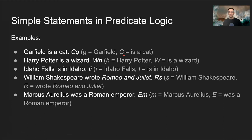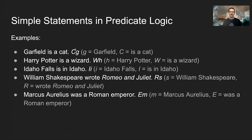In predicate logic, the predicate actually comes first and the object comes second, which is backwards from how English normally works. In English we put the subject first, but in predicate logic the order is reversed. So we say the predicate C ('is a cat') applies to the object g (Garfield). The unit 'Cg' is a complete statement in predicate logic meaning 'Garfield is a cat.'